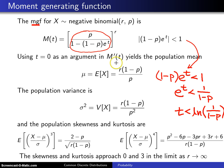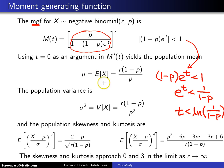If you take a derivative of the moment generating function and plug in t equals 0, you get the population mean mu — the expected value of x — equal to r times (1 minus p) divided by p.